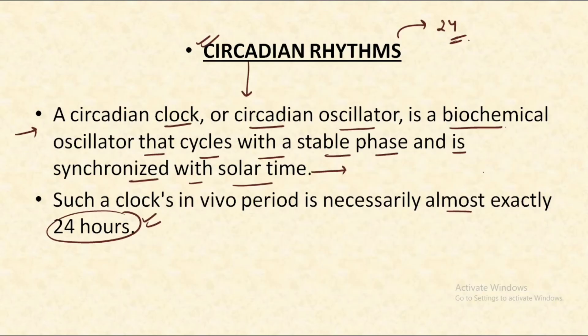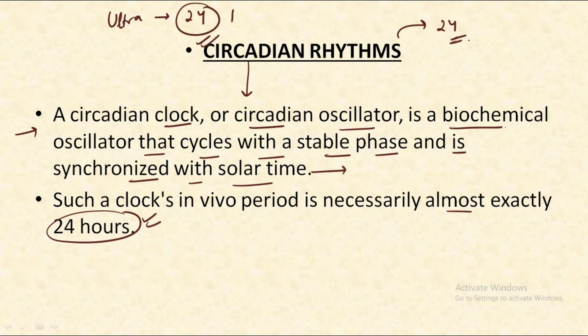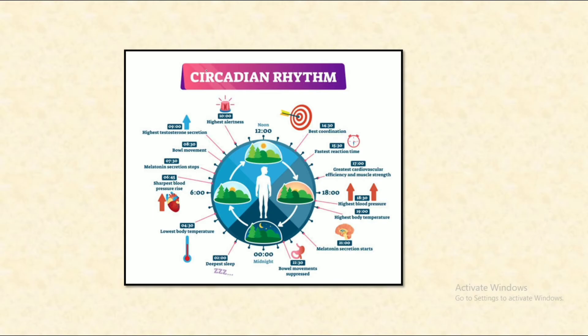If we make a comparison table: ultraradians get completed in less than 24 hours; circadian rhythms get completed in exactly 24 hours; and infradian rhythms get completed in more than 24 hours. The most common example of circadian rhythm is the rhythm followed in our body throughout the complete day — that is, our sleep cycle and morning schedule.